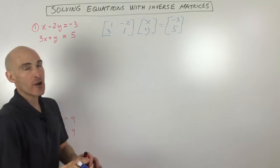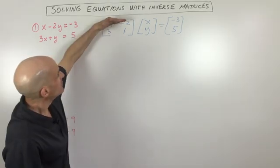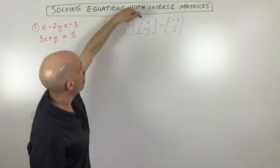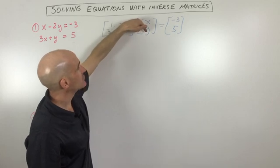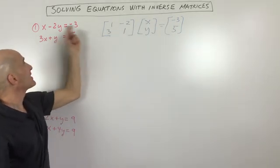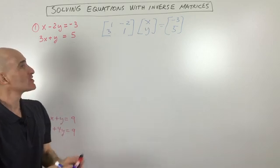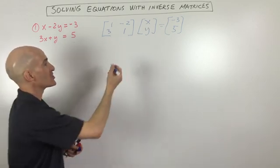Okay, so are you with me so far? If you take this row times this column, you get 1x plus negative 2y equals negative 3, and that gives you back the first equation. Same thing with the second equation. So we've just written this as a matrix equation.